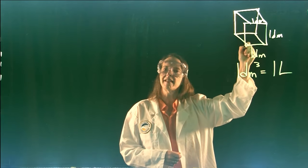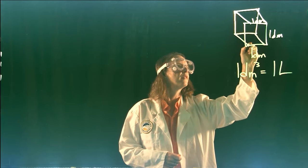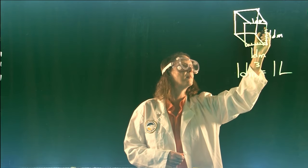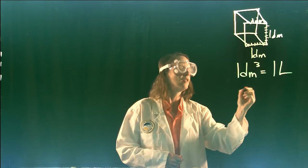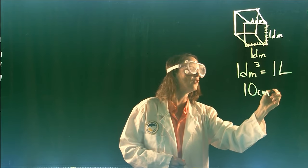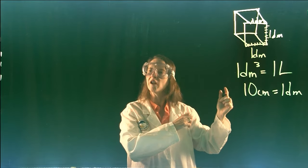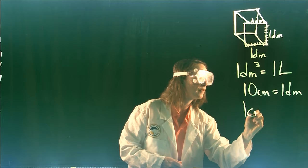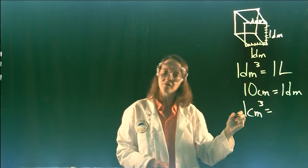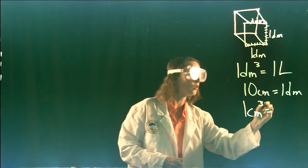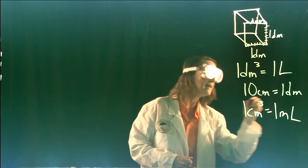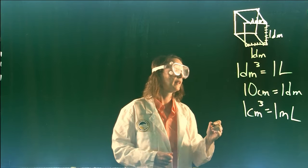If you break this down into centimeters, and I'll approximate that here, there are 10 centimeters equal to one decimeter. And if we pull out one cubic centimeter, that volume is equivalent to what we call one milliliter.